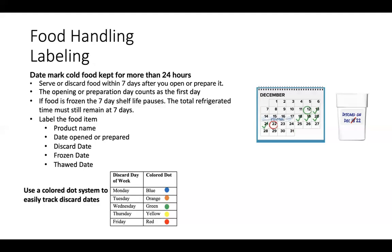Labeling. Each kitchen should have posted near the walk-in the labeling and date marking procedures. Date mark cold food that is to be kept for more than 24 hours. You must serve or discard food within seven days after you open or prepare it. The opening or preparation day counts as the first day. If food is frozen, the seven-day shelf life pauses; however, the total refrigerated time must still remain at seven days. The process is to label the food item with a product name, the date it was opened or prepared, the discard date, and the frozen date and thawed date if this process was used.